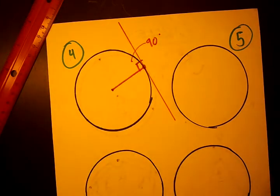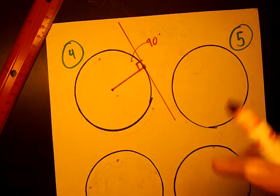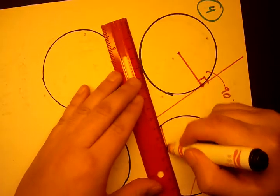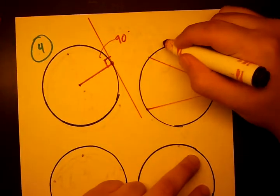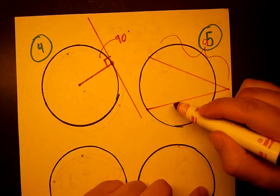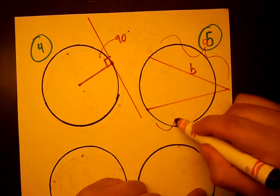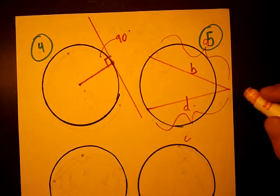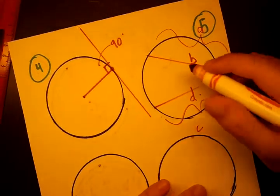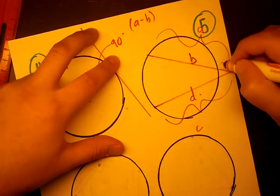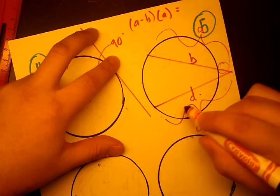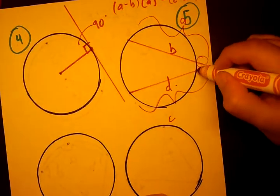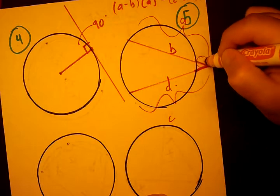Theorem number 5 states that when we draw two secants — lines that intersect at a point — we call the full distance A and the smaller distance B for one secant, and the full distance C and the smaller distance D for the other. Then A minus B, which is the outer piece, times the full length A, equals C minus D times the full length C. So this little outer piece times the whole thing equals the other little outer piece times its whole length.